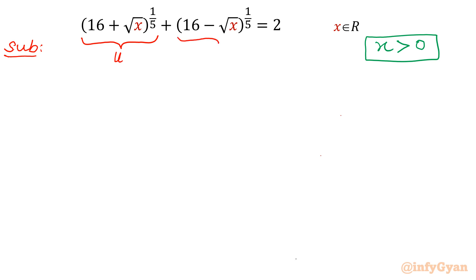And the complete second term including its power I am taking as v — it is the second term only, not the number 2. So our conclusion is u + v equals 2, as given in the problem. This is equation number 1.